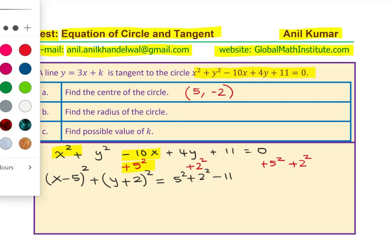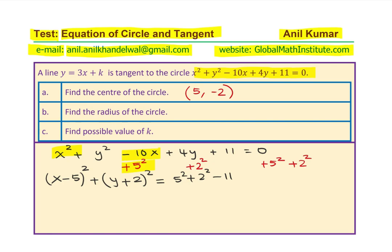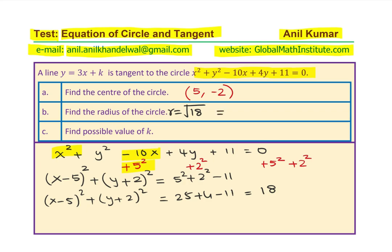The radius is the square root of the right-hand side. We have (x − 5)² + (y + 2)² = 25 + 4 − 11, which gives us 18. So the radius is √18. Since 18 = 9 × 2, in simplified form this can be written as 3√2. So 3√2 becomes the radius of this particular circle.